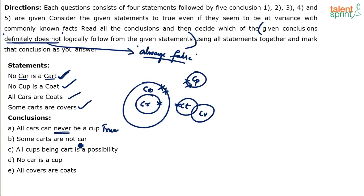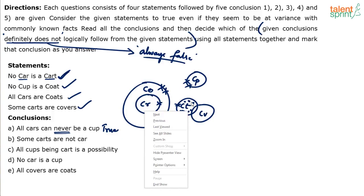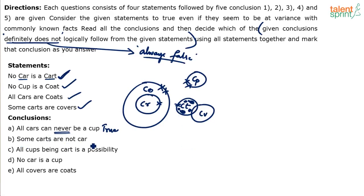Next conclusion: 'Some cars are not cart.' Cars are here, cart is here — true or false? True. Some cars are not cart. I can always choose some cars and say these are not cart. All the cars being not cart is a different story, but I can always choose some of these cars and say these are not carts. So 'some cars are not cart' is always true.